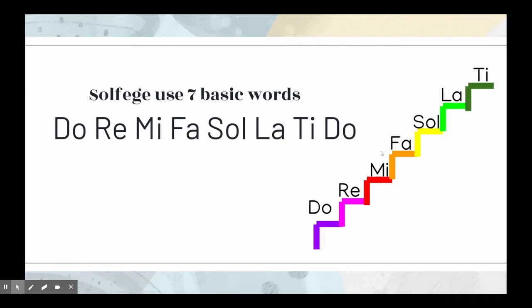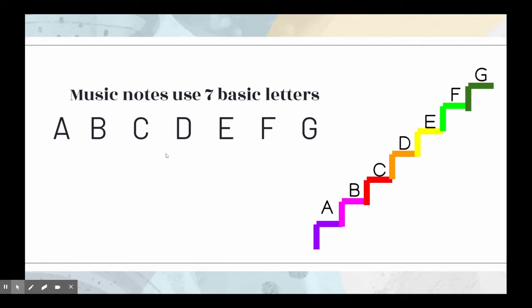We also know that there are seven basic solfege words: Do, Re, Mi, Fa, Sol, La, Ti, and then it repeats back to Do. They follow the same system, the same order. And you notice that we typically sing and read things with solfege, whereas instruments we use letter names because that's how instruments are set up.